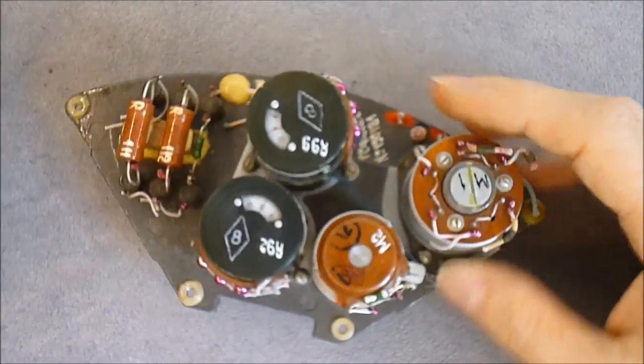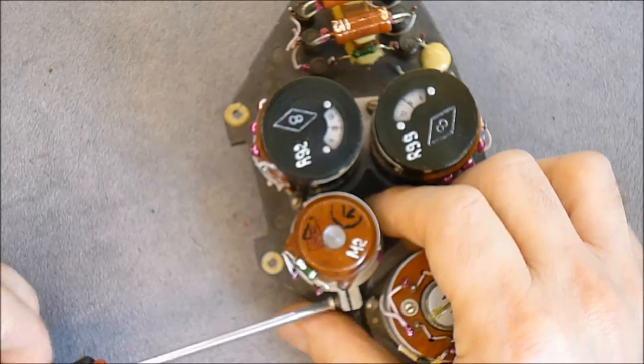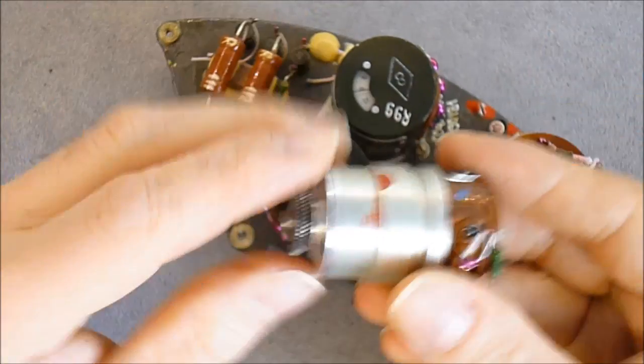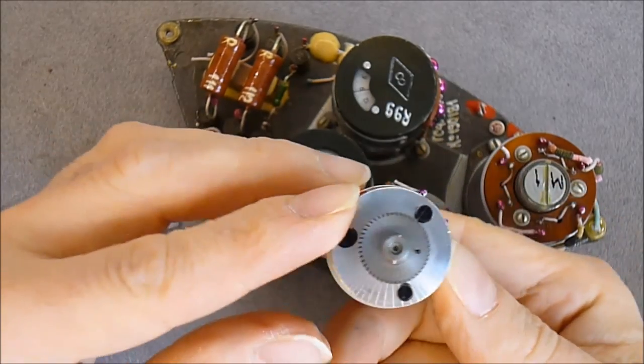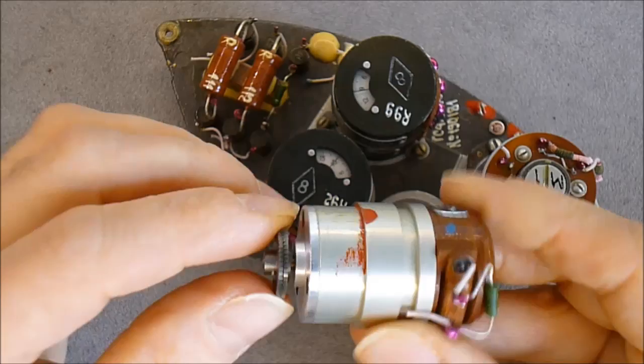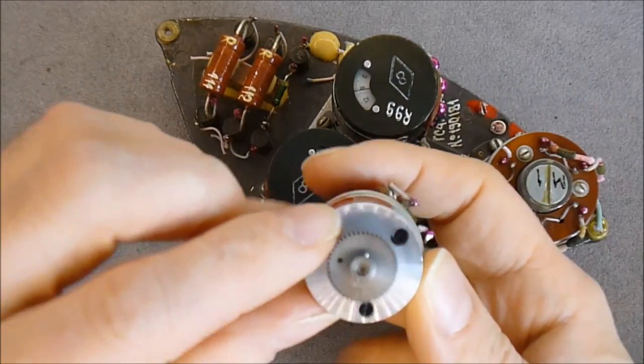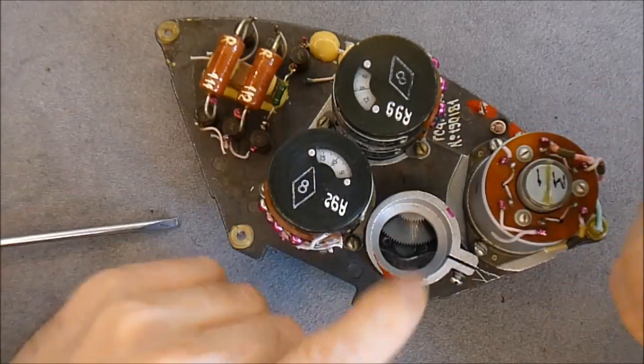So these two units can be removed easily. If I just undo this screw I can lift the motor. You can see small gear here. I can power it to see if it turns. But my power supply is not strong enough.